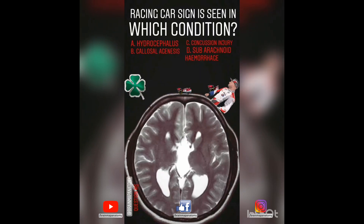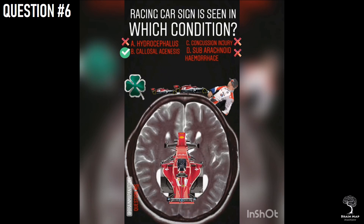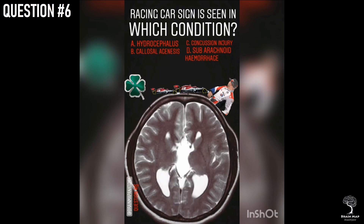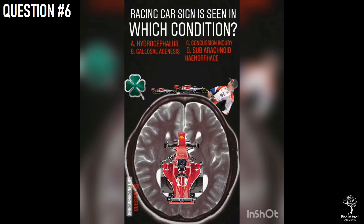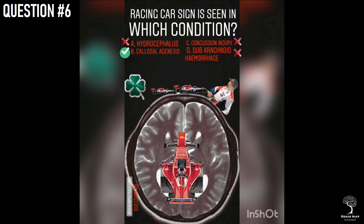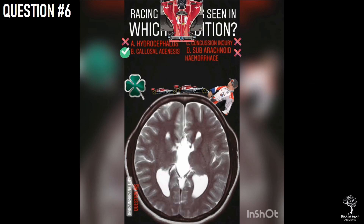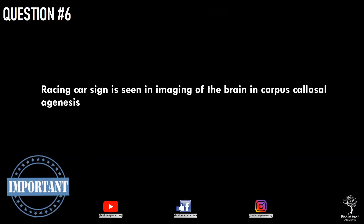Question 6. Racing car sign is seen in which condition? The right answer is option B, corpus callosal agenesis. The image shown is an axial MRI of the brain with the racing car sign. Appearances on axial MRI or CT remind us of a Formula 1 car seen from above, with the tires represented by widely spaced frontal horns and the dilated trigones due to agenesis of the corpus callosum. Corpus callosum is the band of white matter commissural fibers connecting the two hemispheres. Agenesis of the corpus callosum is a rare congenital disorder with complete or partial absence of the corpus callosum. Individuals have difficulty transferring complex information from one hemisphere to the other. Take home message: racing car sign is seen in imaging of the brain in corpus callosal agenesis.